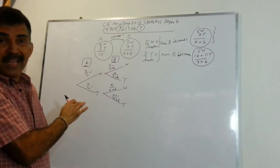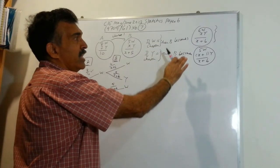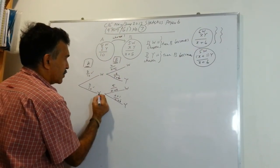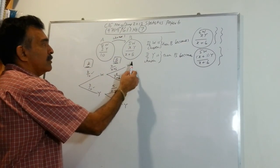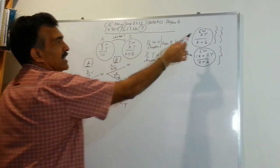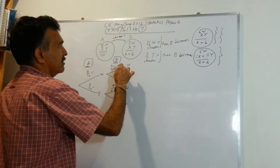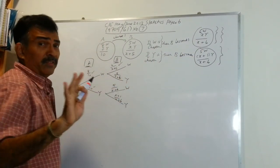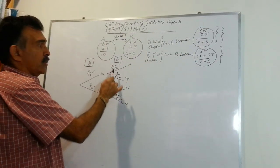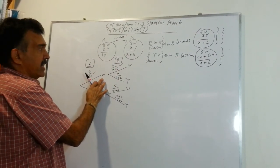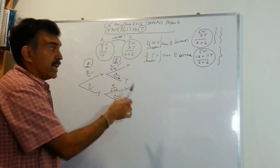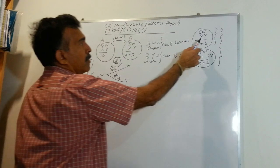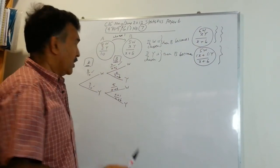These are pure probabilities. Had you chosen a white from A, then we are looking at this box B. The probability of drawing a white from B will be six over X plus six. Drawing a yellow from box B will be X over X plus six. Had you chosen a white from A, the probability of drawing a white from B is six over X plus six, and the probability of drawing a yellow from B is X over X plus six.